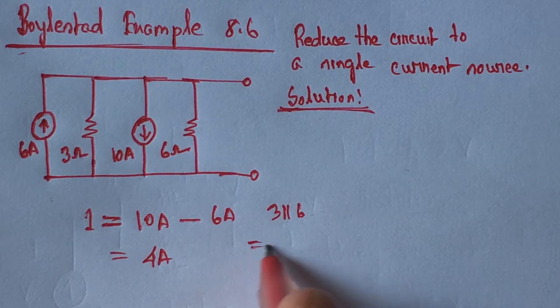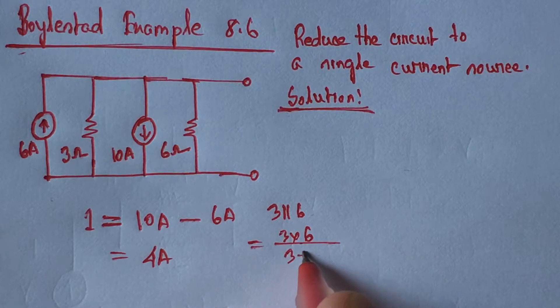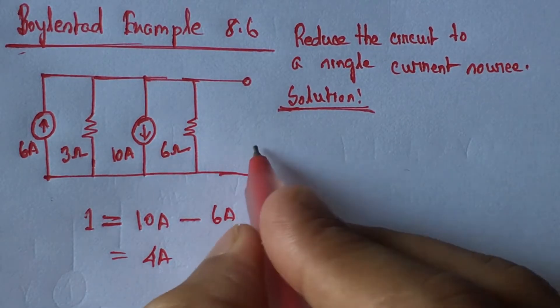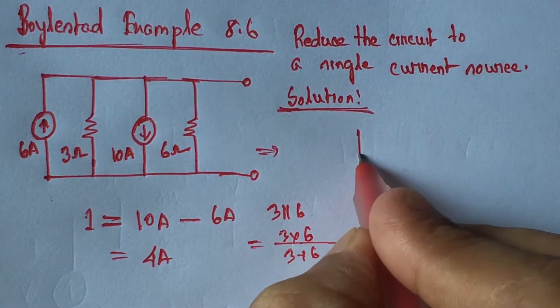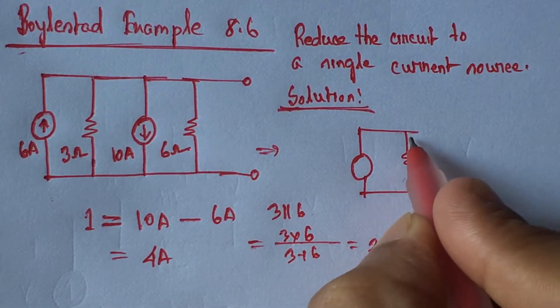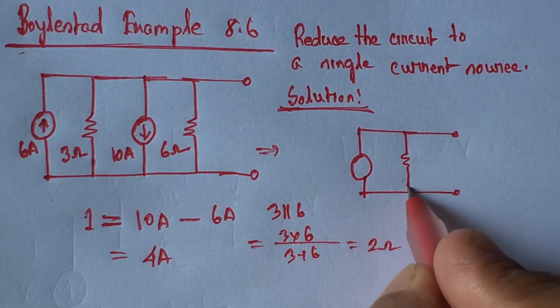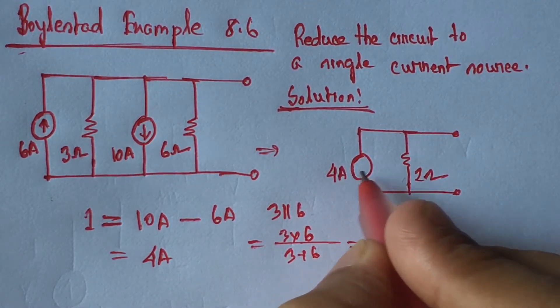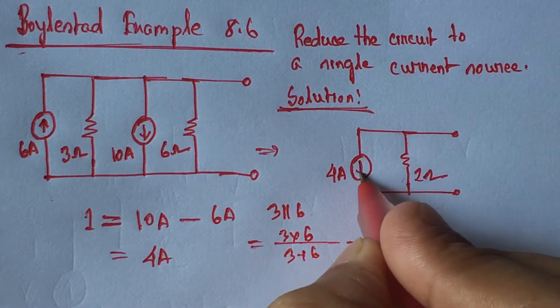If we take the equivalent resistance of 3 and 6 ohm, this becomes 2 ohm. So if we redraw the circuit, it will become one current source with parallel resistance of 2 ohm. This is 4 ampere and the source is downward.